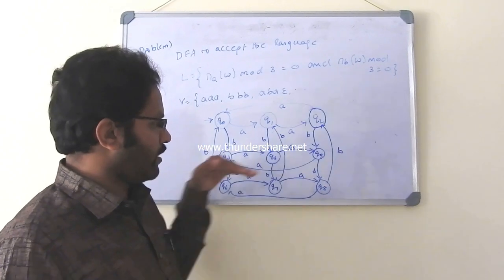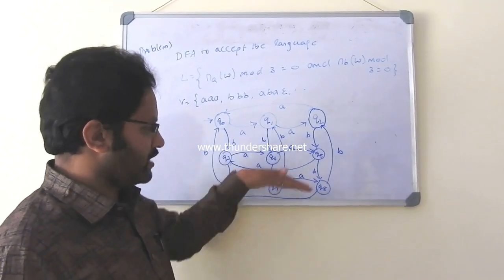Where you write your states. Q naught, Q1, Q2, one row. Q3, Q4, Q5, next row, and so on.